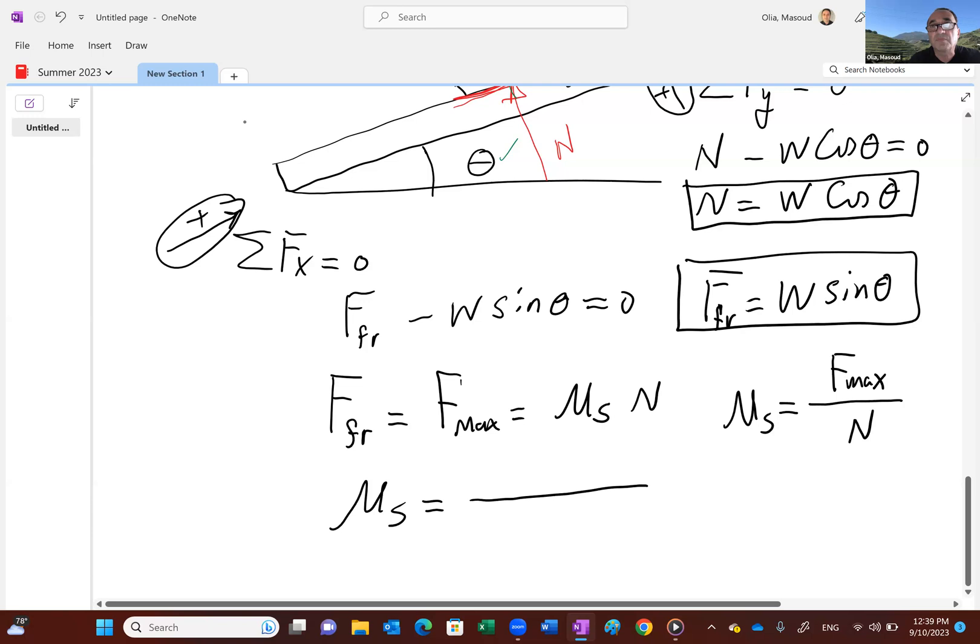So if I take F, which is w sine theta, friction force, and then I just determined that n is w cosine theta. Look, w and w cancel. This becomes tangent theta. And that's exactly what I said in the video.